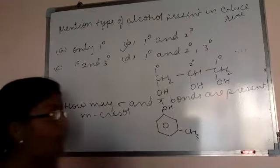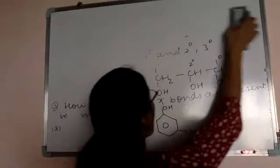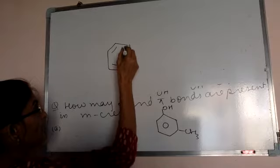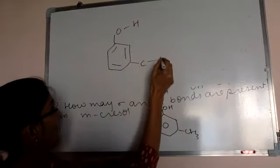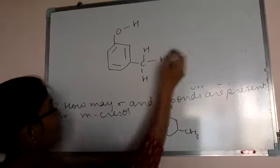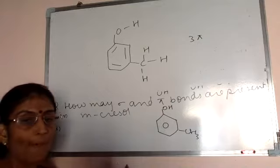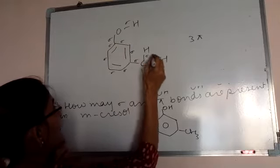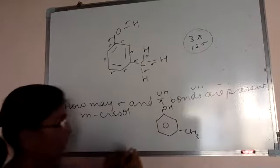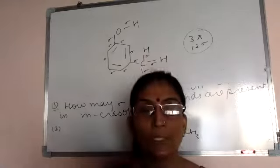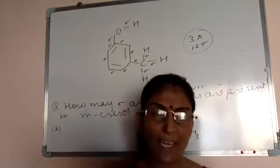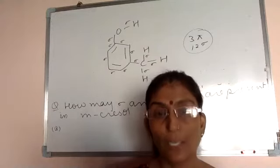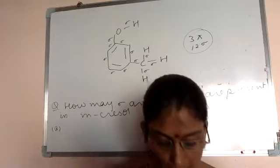Count how many sigma and how many pi bonds are there in metacresol. Sigma bonds: 1, 2, 3, 4, 5, 6, 7, 8, 9, 10, 12 — so 12 sigma bonds and 3 pi bonds are there in metacresol. Orthocresol and paracresol all have the same number of sigma and pi bonds; only the position differs. Cresol means 3-hydroxy phenol, that is called cresol.